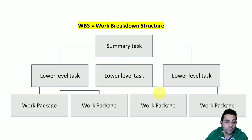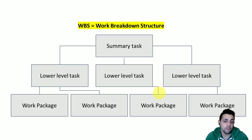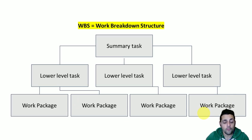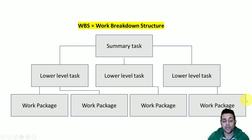When we are making a work breakdown structure, we always try to keep in mind the MECE principle, which is mutually exclusive, collectively exhaustive. That means that all of the activities that form the lower levels of the tree — the sum of these activities — must form the entire work that is related to our project. But also, there should not be any overlap between the work of different activities. So always keep in mind the MECE principle.